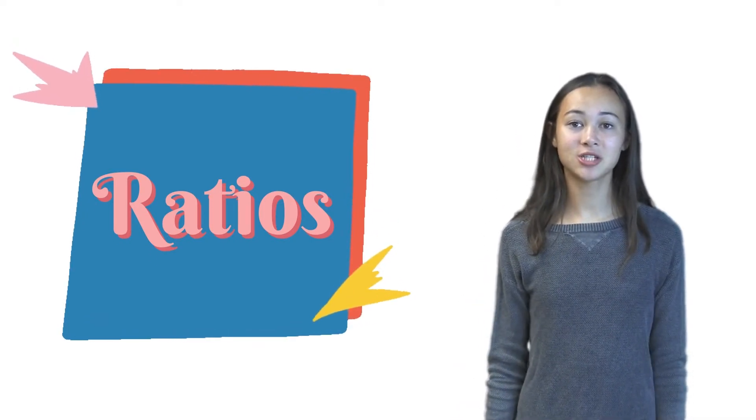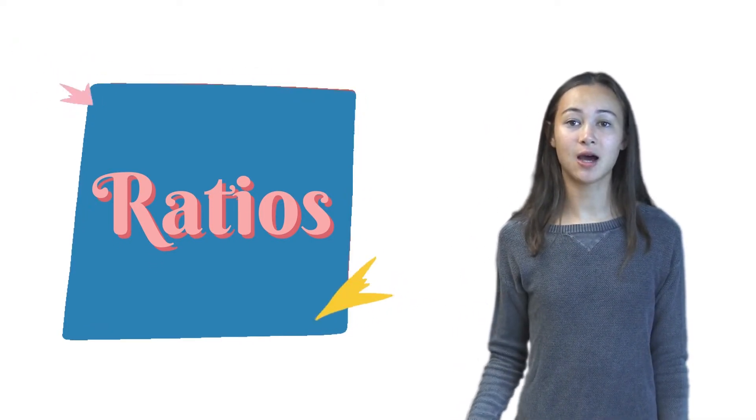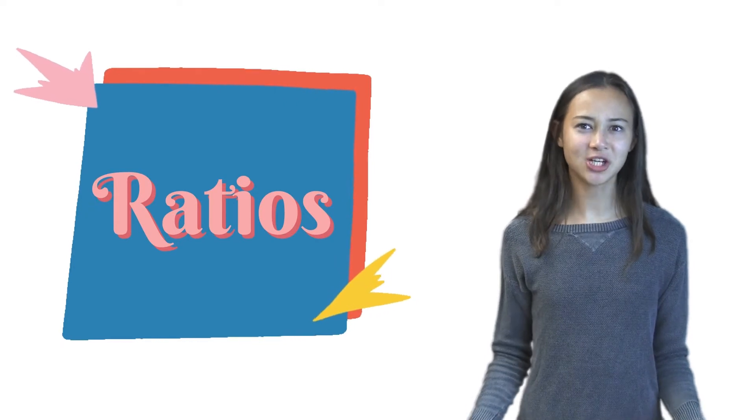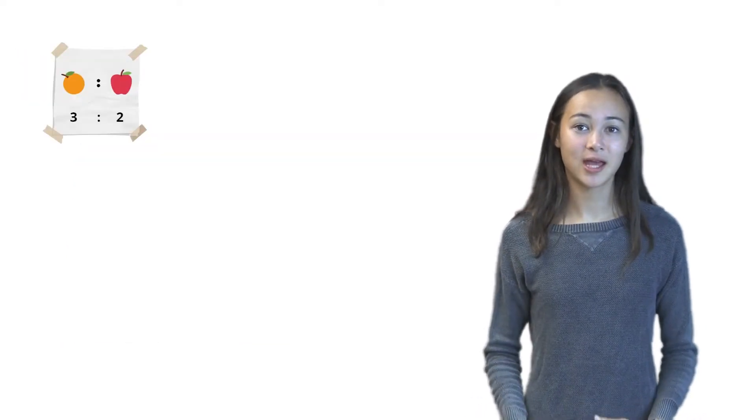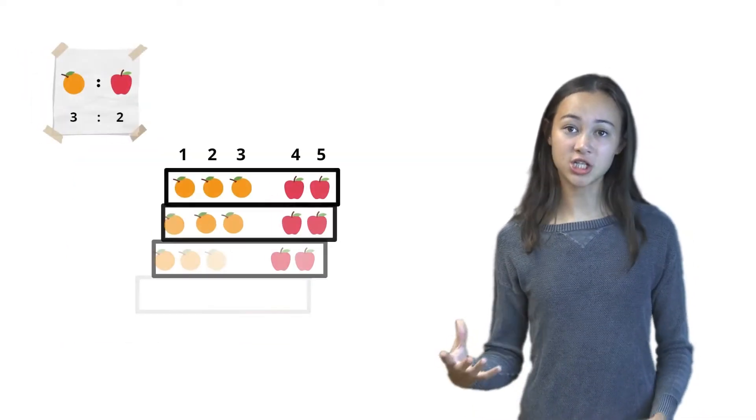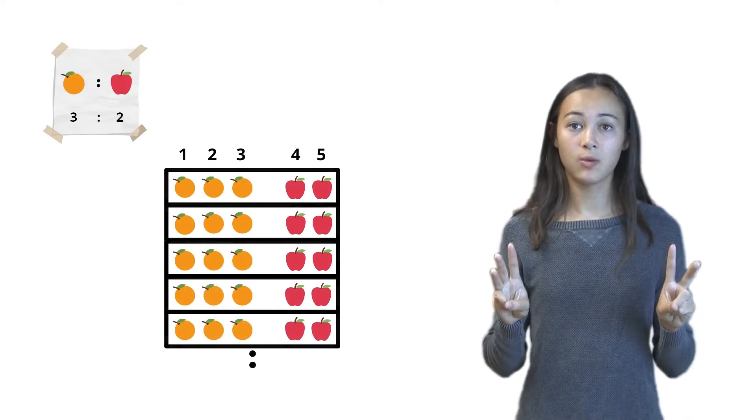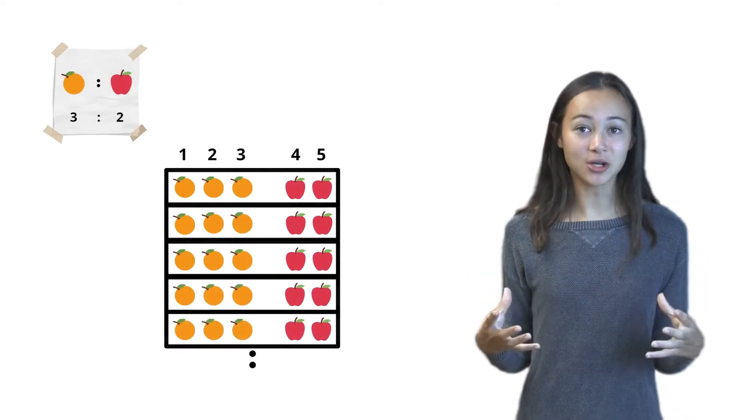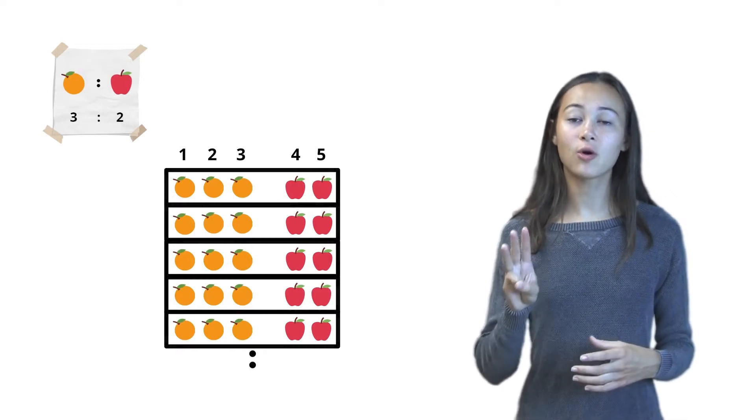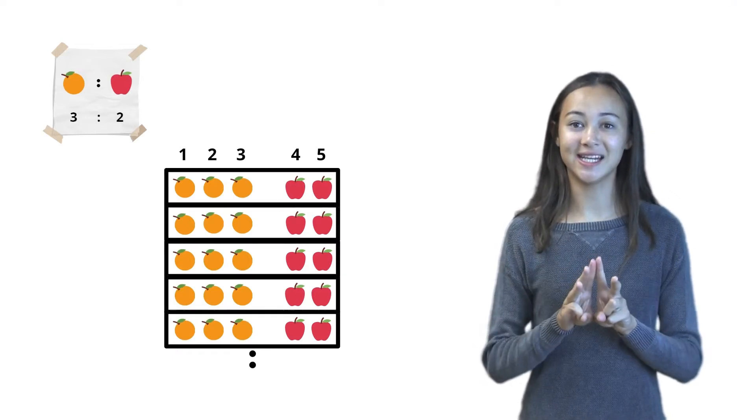In the last video, we learned how to group objects to help us picture what the ratio would look like. For example, if we have a ratio of oranges to apples is 3 to 2, we can put all these fruits into groups with 3 oranges and 2 apples in each group.